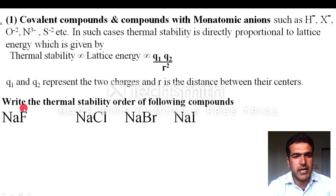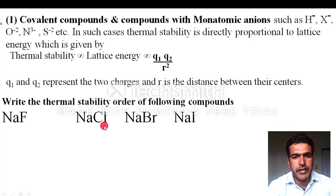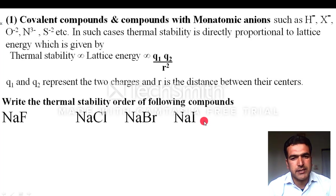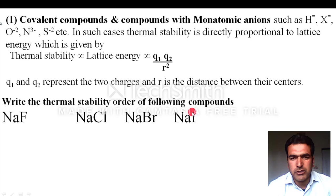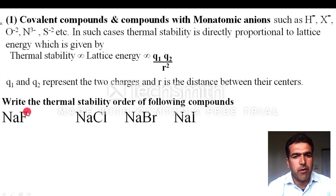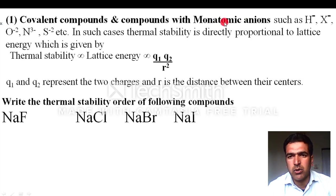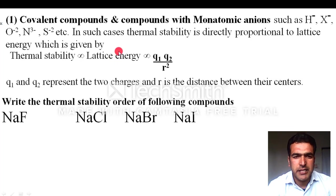Now a question: write down the thermal stability order of sodium fluoride, sodium chloride, sodium bromide, and sodium iodide. These anions — iodide, bromide, chloride, and fluoride — are each made up of one atom, so they are monoatomic anions. Thermal stability depends on lattice energy, which depends on the magnitude of charges and distance between charges.